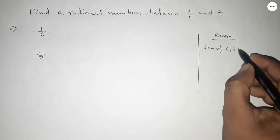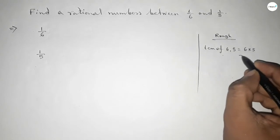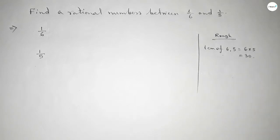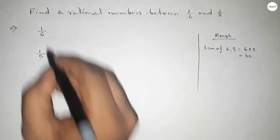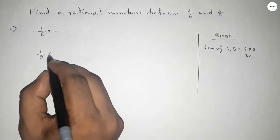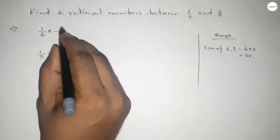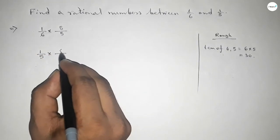The LCM of 6 and 5 is the product of 6 and 5, so this is 30. So we should multiply here and here - what should we multiply? If we put 5 here...